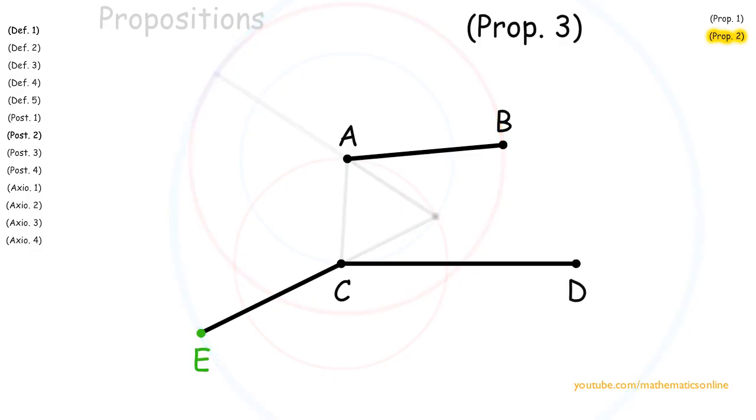So from Proposition 2, we are given that line AB is equal to line CE.